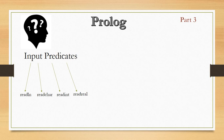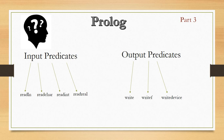For output predicates there are three: write, writef, and write_device. write simply prints whatever is in double quotes to the output device or screen. writef, where 'f' stands for format, is used when output needs to be in a particular pattern. write_device redirects output directly to the printer instead of the monitor.